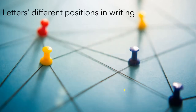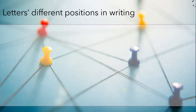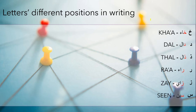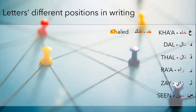Now let's move to the next slide — the next set of alphabets: Kha, Dal, Thal, Ra, Zay, Seen. As you can see, these four letters — Dal, Thal, Ra, Zay — are the exception rule we just saw in the previous slide. Those letters — the four letters — plus the letter Alif, which is the starting letter of the Arabic alphabets, all follow the special connection rule.